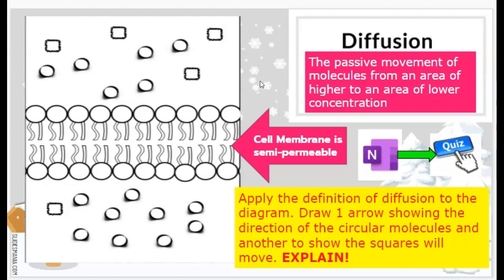That's a misconception. We are going to assume for this that the molecules can both pass through — both the circular molecules and the square molecules. Your goal is to apply the definition of diffusion: draw one arrow from a circular molecule showing the direction they will go, then draw another arrow from a square molecule showing the direction it will move. Then explain, and in your explanation, look at the definition for diffusion for full points. That is in your OneNote notebook in the quiz section, and it is 4B.